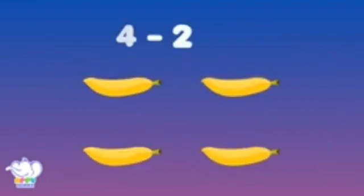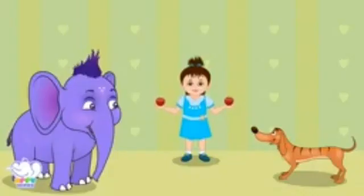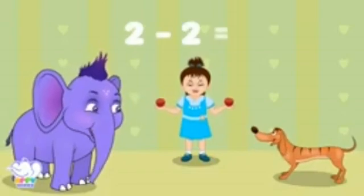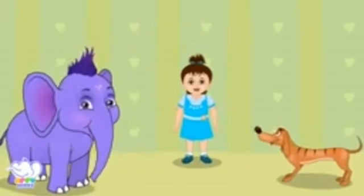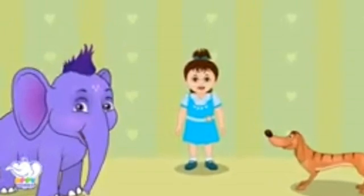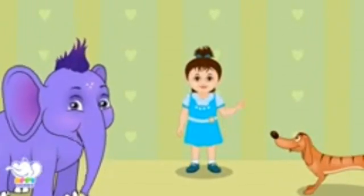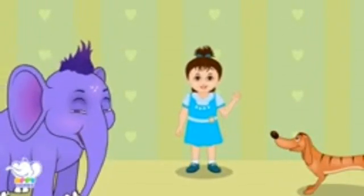Subtract 2 from 4, you'll get 2. There goes 2, leaving very few. Subtract 2 from 2, you'll get 0. Here is 1 and 2 — away they go. 0, zilch, nothing.